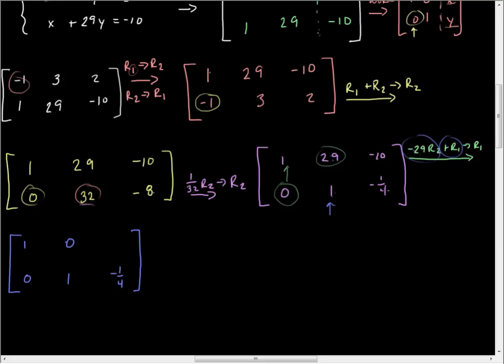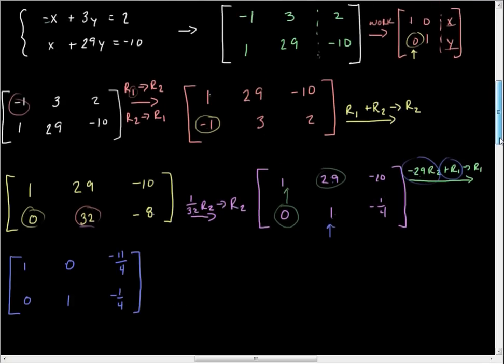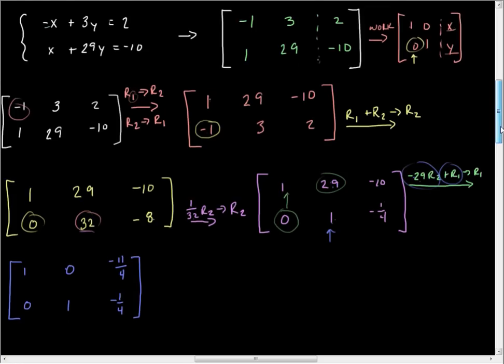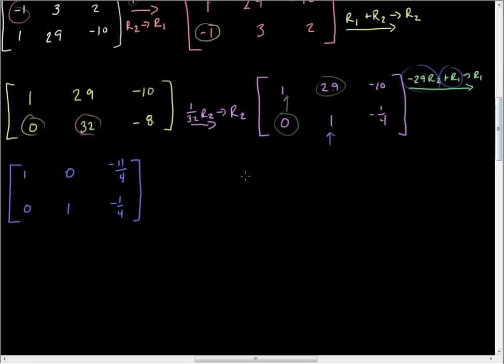If you need to, put that off to the side. Now we have it. We look like 1's on the diagonal, 0's everywhere else, just like what we wanted to do. We're done. This interprets as 1x plus 0y equals negative 11/4, and 0x plus 1y equals negative 1/4. That means that x equals negative 11/4, and y equals negative 1/4.